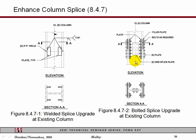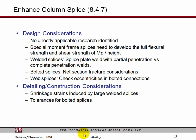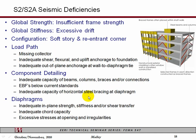Bolted splices probably don't develop the full capacity of the member in many cases. If that's a desire from your retrofit design, the idea is to transfer what is probably a single shear type of bolted splice into a double shear, adding additional bolts and plates to make that happen. Issues are going to be around being able to get access to drill the holes, what to do about keeping the splice in place while adding new plates, and similar construction issues. On the design considerations side, on the welded side you need to worry about shrinkage strains from large splices and tolerances on bolted splices.